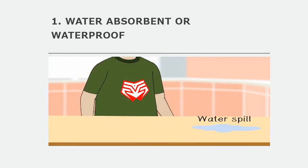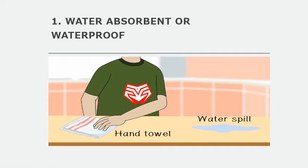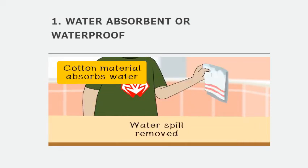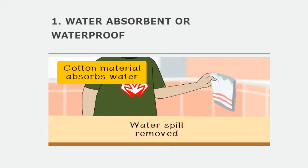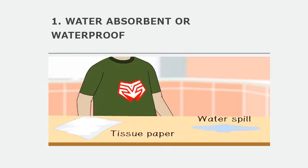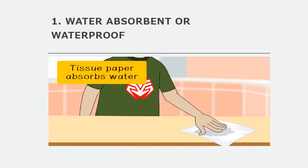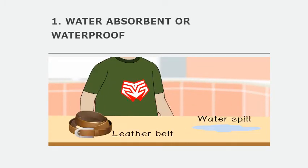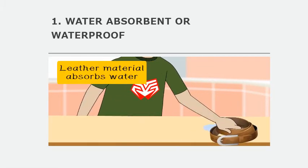Some objects absorb water. Examples of these are a hand towel, tissue paper, and a leather belt. The objects are water absorbent. The hand towel, which is made from cotton, absorbs water. Tissue paper is made from paper and absorbs water. A leather belt is made from leather. Leather material absorbs water.